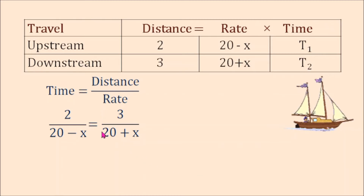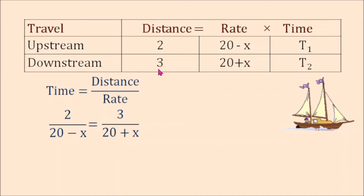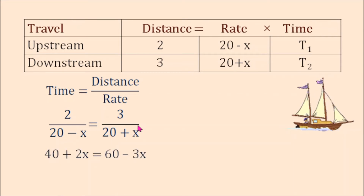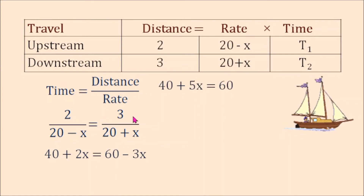Why are we equating the two? It's because the problem says the time spent traveling upstream is equal to the time spent traveling downstream. Now let's solve this equation. We cross-multiply: 2 times 20 is 40, and 2 times x is 2x. That equals 20 times 3 is 60, and negative x times 3 is negative 3x.